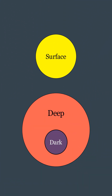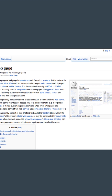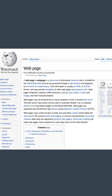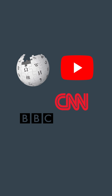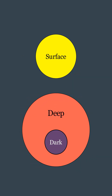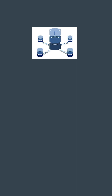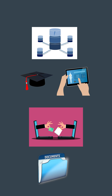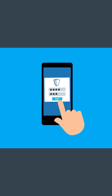The surface web is the portion of the internet that is indexed by standard search engines like Google or Bing. It includes websites and web pages that are publicly accessible and searchable without any special configurations — some examples are Wikipedia, YouTube, and news websites like BBC or CNN. The deep web consists of parts of the internet that are not indexed by conventional search engines. This includes private databases, academic and medical records, subscription-based services, and internal company intranets. Access to the deep web typically requires special permissions and credentials.